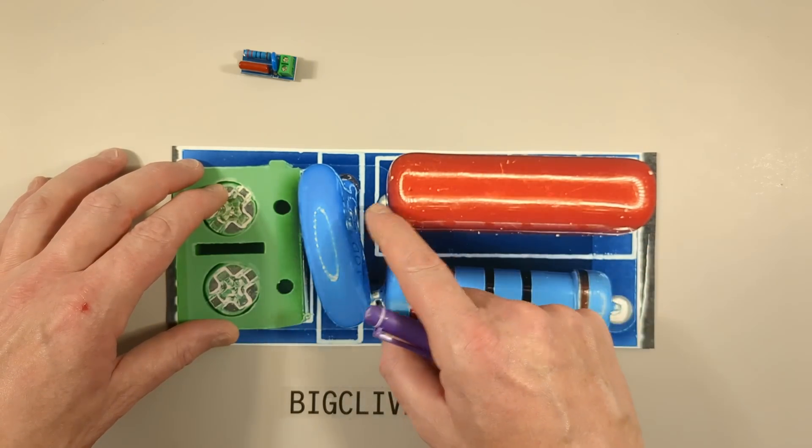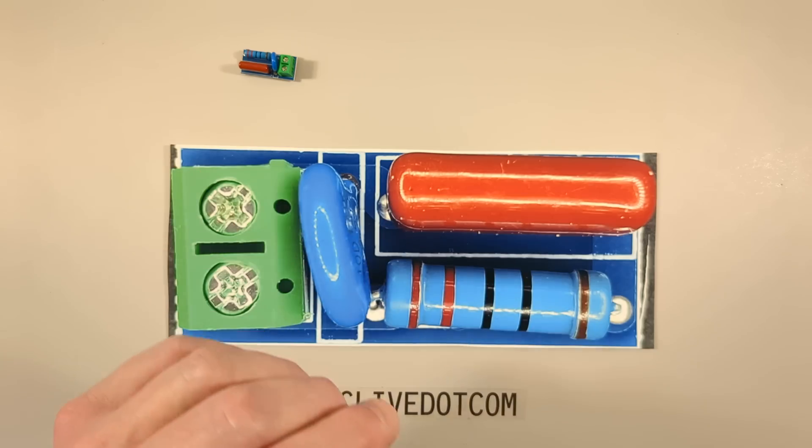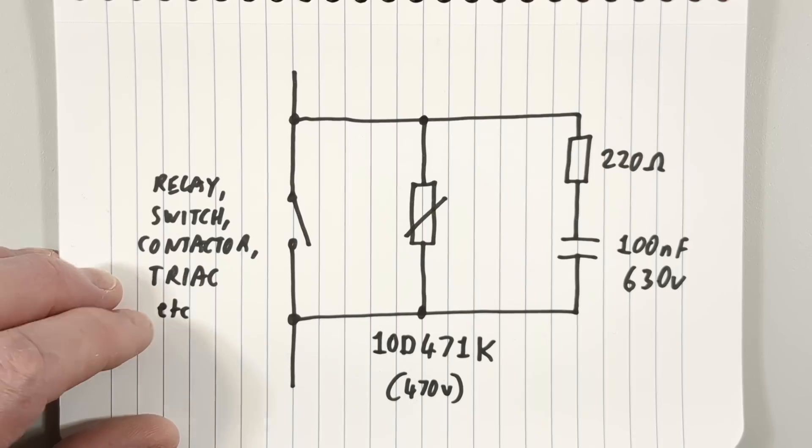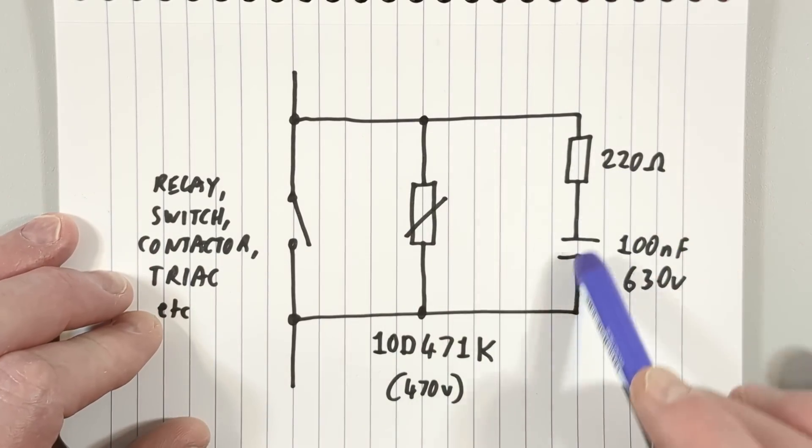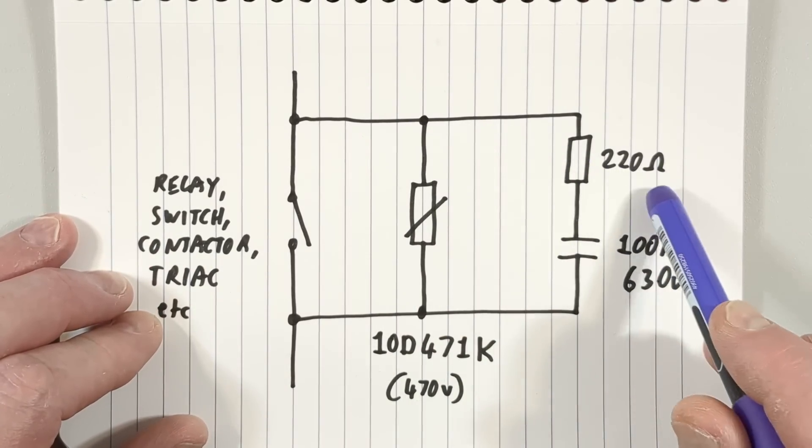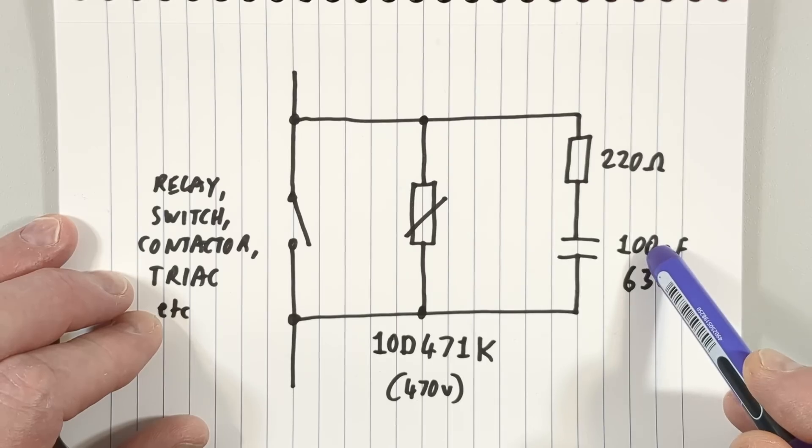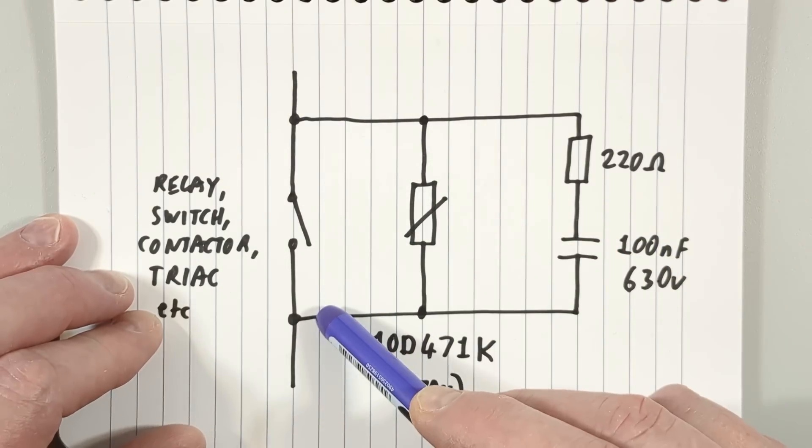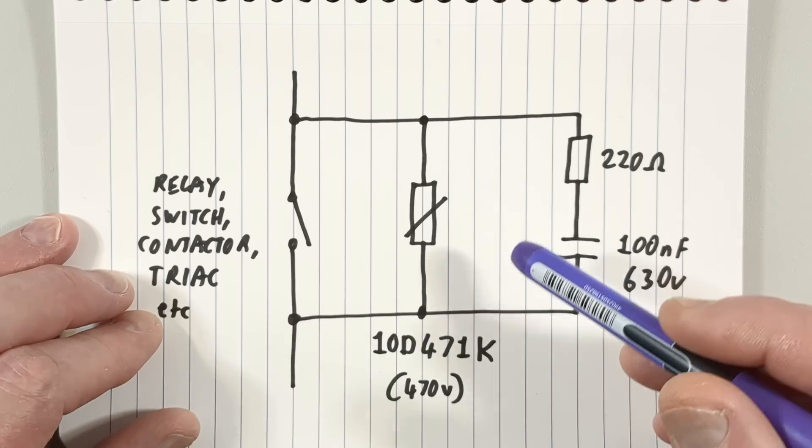Let me show you the schematic of this. The classic snubber network is usually a 100 ohm resistor and a 100 nanofarad capacitor hooked across a relay contact, and it has multiple functions.